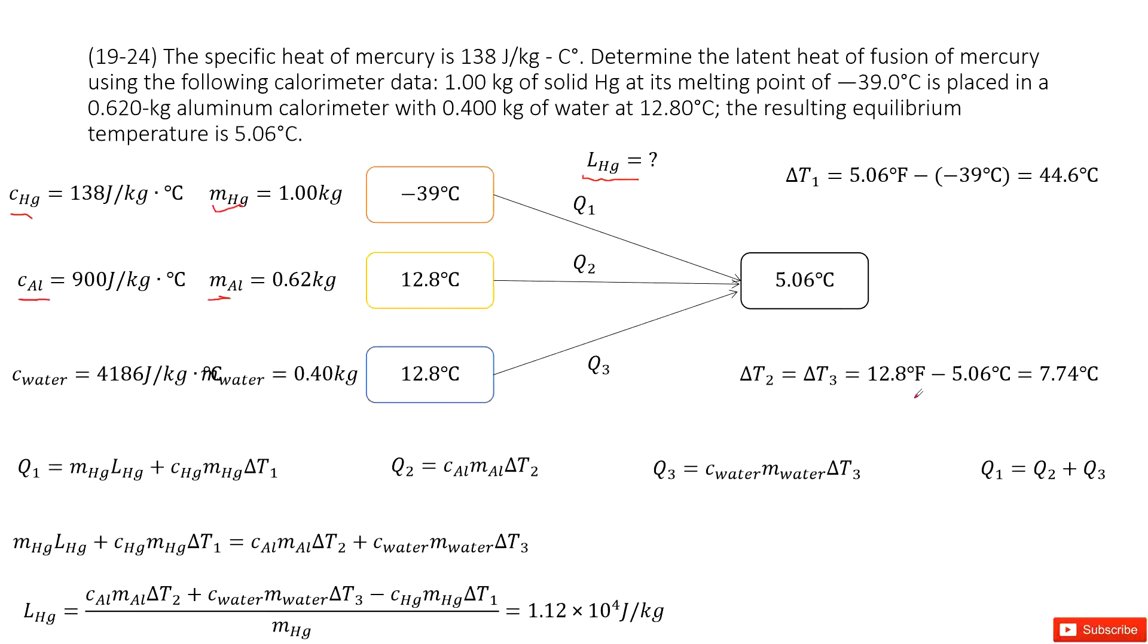Now we can see how we can solve the problem. The first part, we can write Q₁, the heat released by the mercury. And it tells us the mass of mercury is 1 kg. It is solid at its melting point. So this one is a melting point.